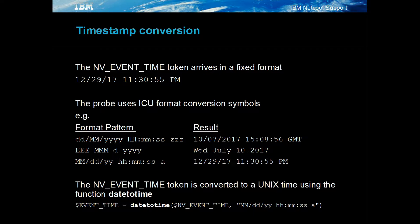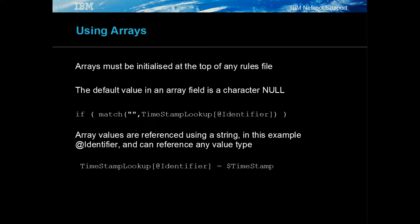Text timestamps can be converted to UNIX timestamps using the date-to-time function. UNIX timestamps are useful when the value needs to be used in object server fields and for value comparisons. The date-to-time function uses the ICU standard for date and time conversion. Arrays must be defined at the top of the main rules file. Their initial value is a null string and are referenced using a unique string. Note, arrays are unbound in size and so can use excessive memory if they are not limited. Restarting the probe's process resets arrays and static variables.